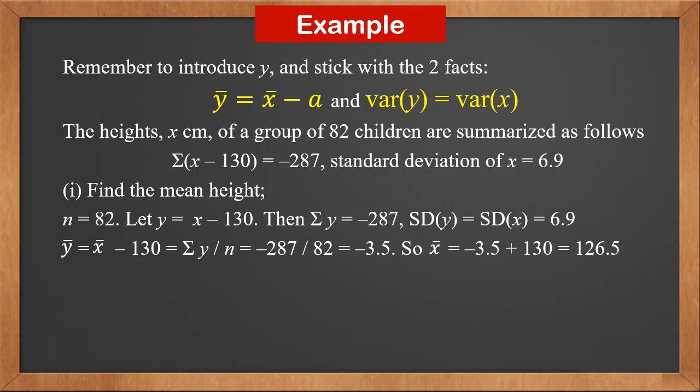Y bar is sigma y over n, which is minus 287 over 82. This is minus 3.5. So x bar is minus 3.5 plus 130, which is 126.5.